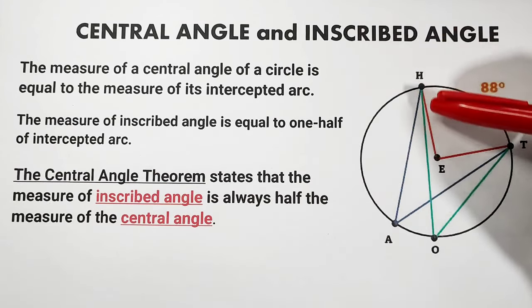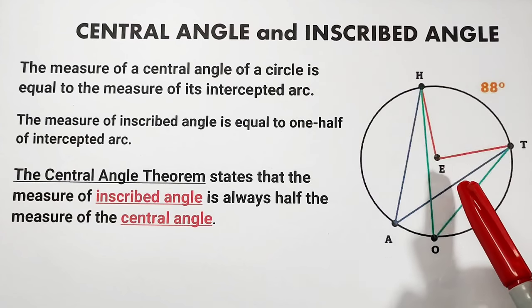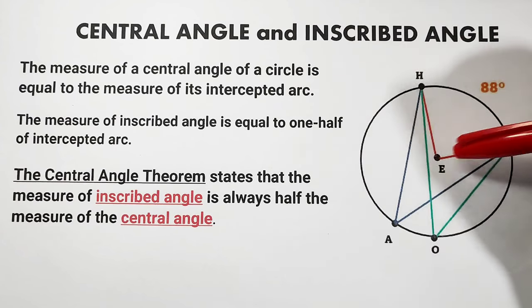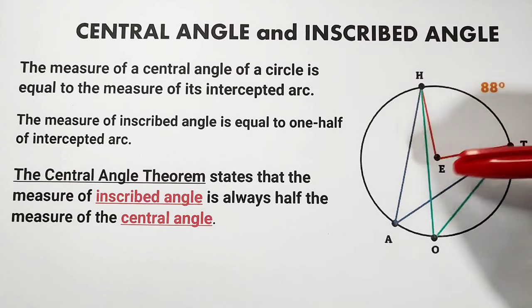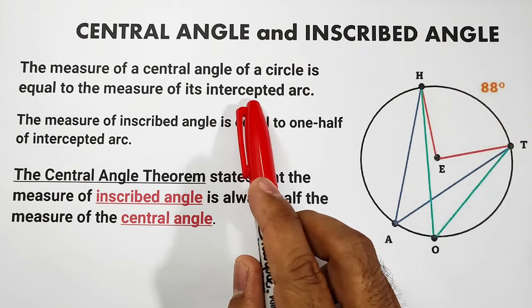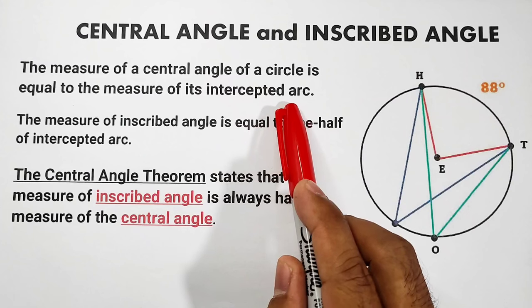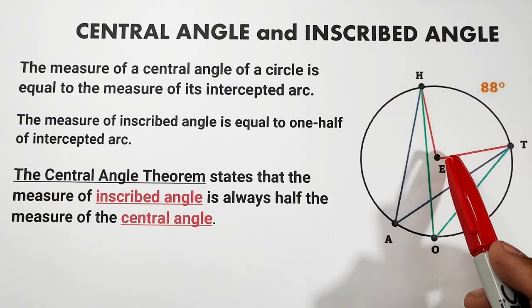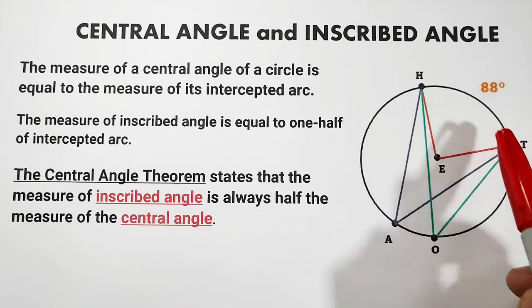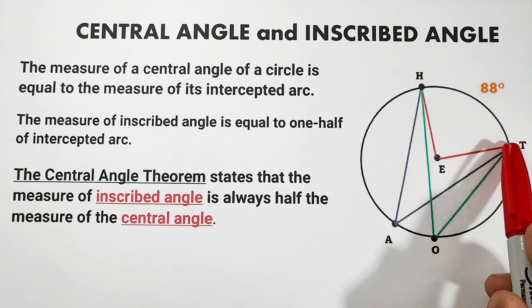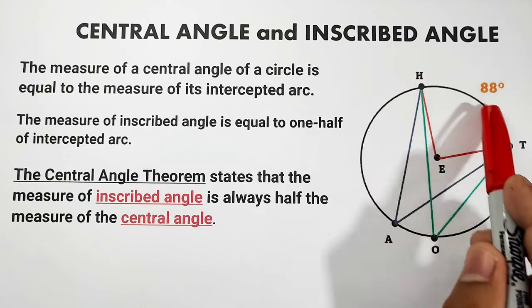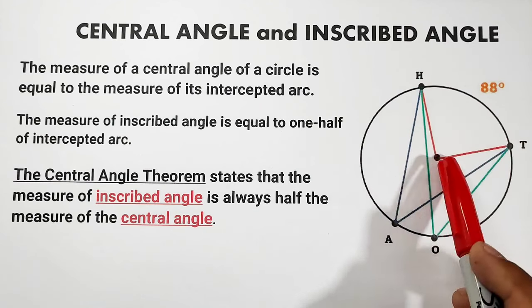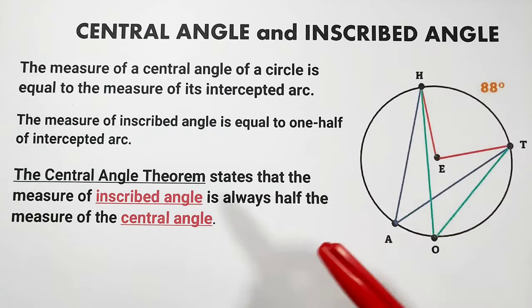What is our central angle in this figure in circle E? Our central angle is angle HEP. And what is our intercepted arc? The intercepted arc of the central angle is arc HT. The opening of angle HEP covers arc HT.